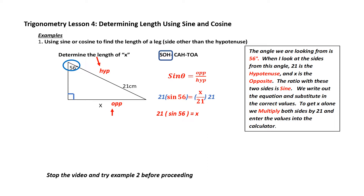I'm now ready to punch this into my calculator. Don't forget, we're going to punch it in as 21 multiplied by the sine of 56 equals. If you have an on-screen calculator, you're going to do that in reverse order: 21 multiplied by 56 sine equals. The answer is 17.4 centimeters.